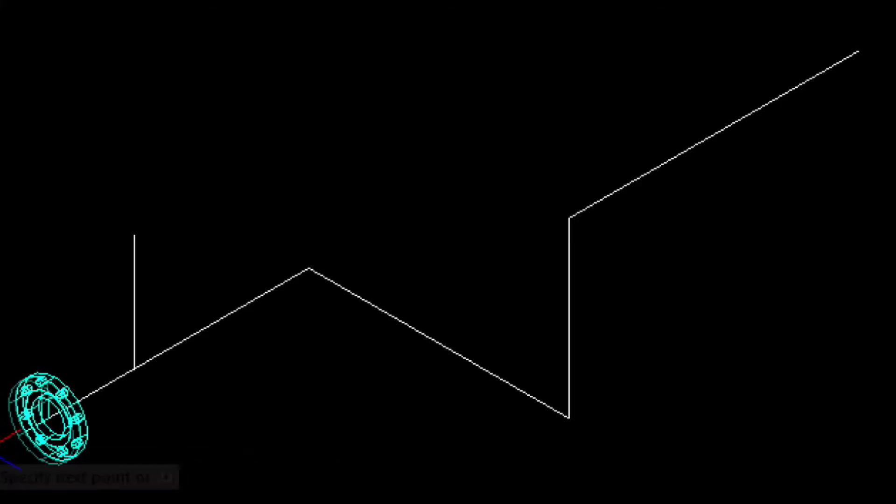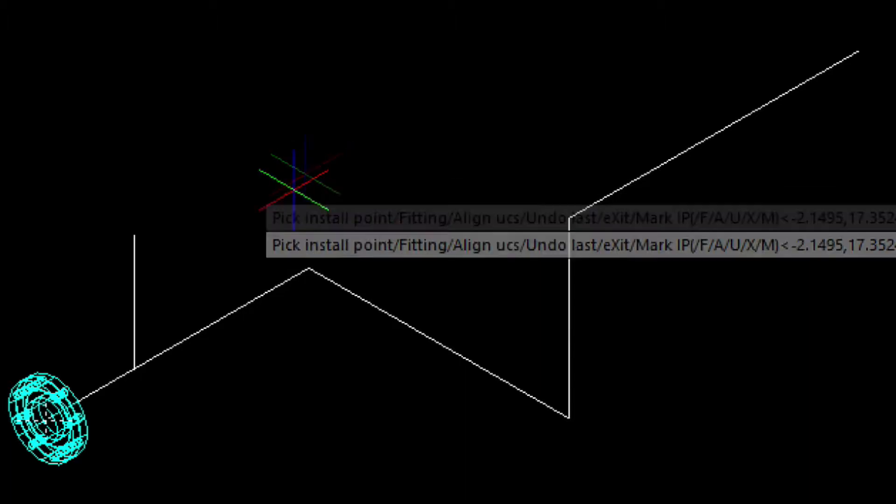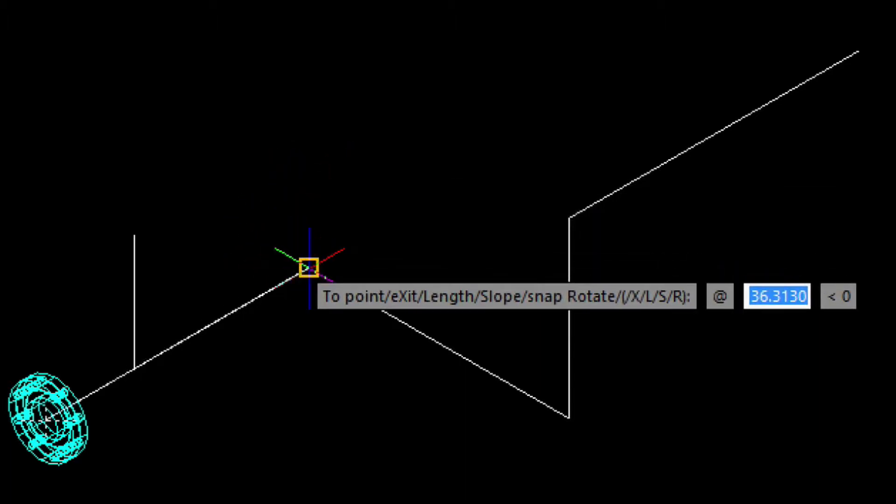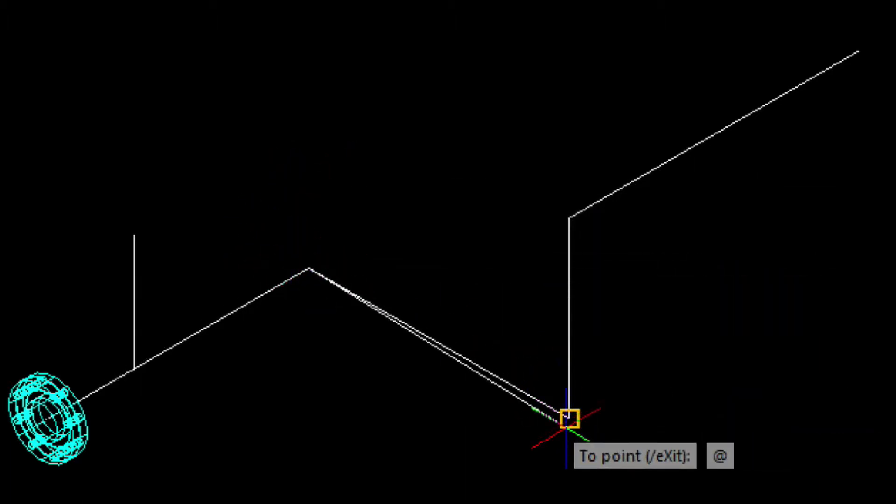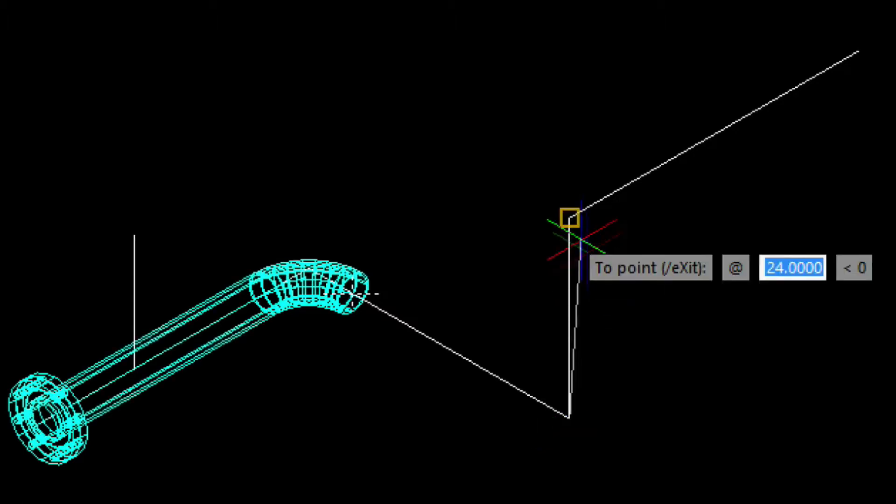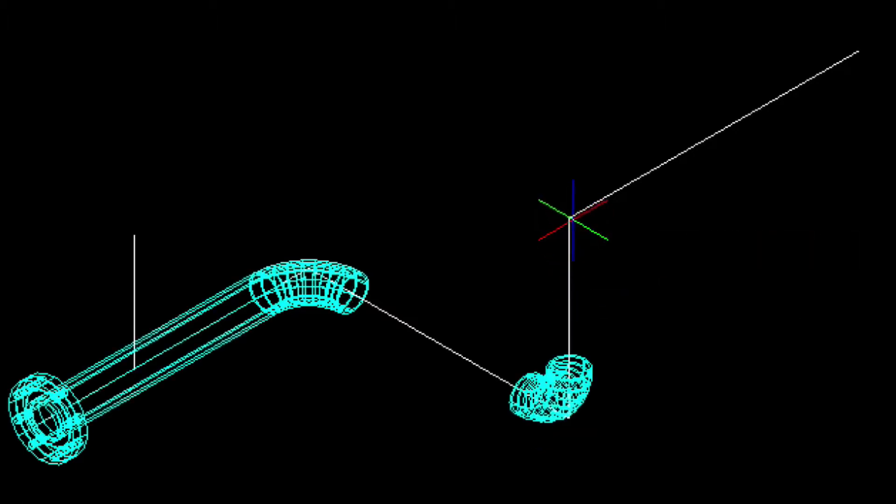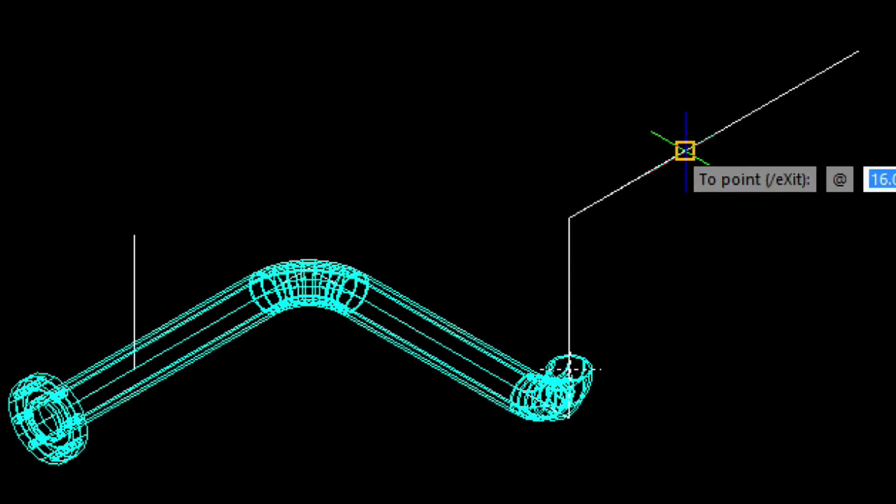Now, for the fun part. We'll simply select a straight piece of pipe and then trace over our 3D construction lines. Notice how MEC-Q is automatically adding elbows at each turn. Now, on the back side of this run, I want to add a reducer.